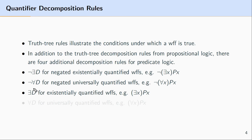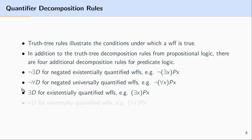Next we have existential decomposition, abbreviated as 'backwards-E D.' This applies to existentially quantified well-formed formulas — that is, formulas where the main operator is the existential quantifier. So if you see a formula where the main operator is the existential quantifier, the corresponding truth tree rule to apply is existential decomposition.